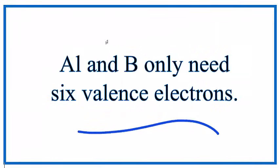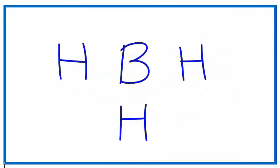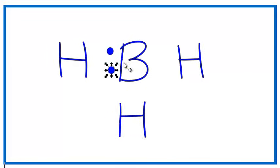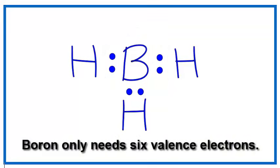Aluminum and boron. Let's look at BH3. Boron has three valence electrons. Each hydrogen has one, so we have six valence electrons. We'll put a pair of electrons between each atom to form chemical bonds. So we've used all six valence electrons. The hydrogens each have two. That means their outer shell, or highest energy level is full, and the boron only has six. But boron is an exception to the octet rule. It only needs six.